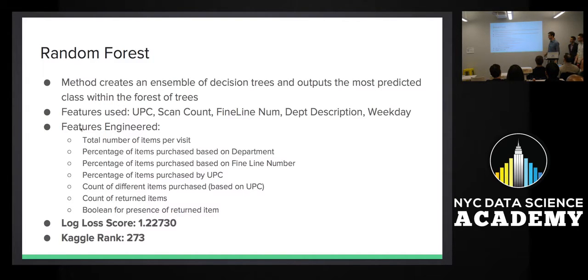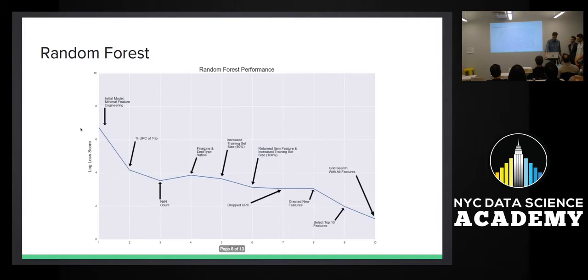I also looked at the percentage of purchase based on the UPC, and these features that I've listed here were the ones that proved to be the most important. I generated pretty much any feature that I could think of to try to extract more information from what was given to you. I ran this 10 times, and you can see that just from feature engineering with random forest, I was able to reduce the log loss from 6.3 all the way down to roughly two.